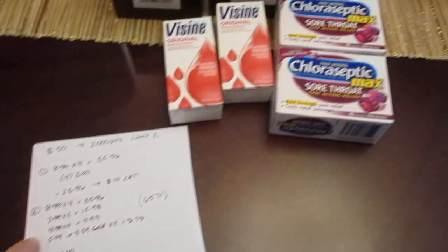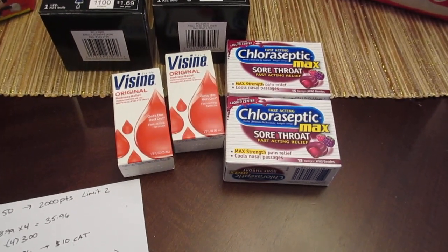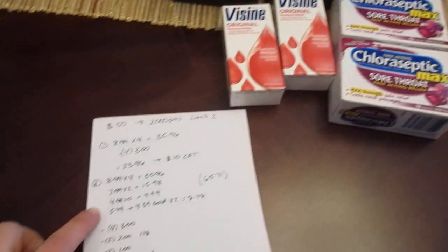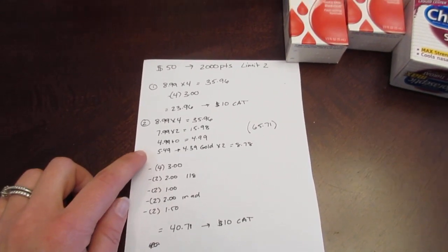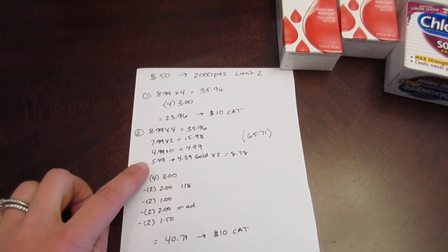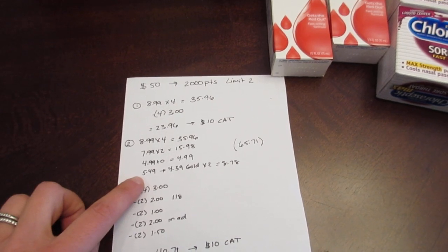I purchased two of the ChloroSeptic. They are buy one, get one free, and it's $4.99 for one. So it's $4.99 for both. And then I have two of the Visine. So the Visine is $5.49, but it brings up $4.39 if you have gold. So two of them at gold would be $8.78.